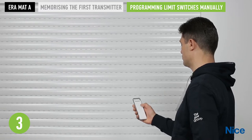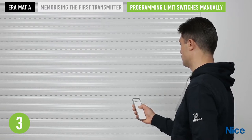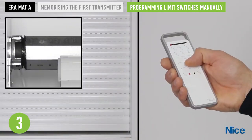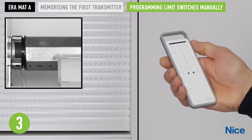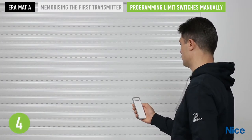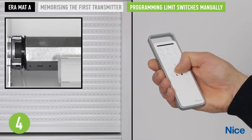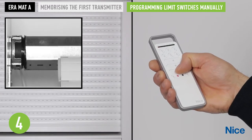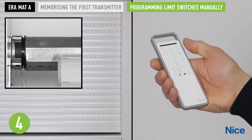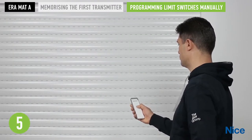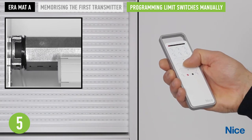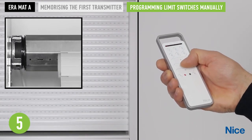Step 3: Press and hold the down arrow key and wait for the rolling shutter to perform two movements, then release. Step 4: Press and hold the down arrow key and wait for the rolling shutter to perform two movements, then release. Step 5: Press and hold the stop key and wait for the rolling shutter to perform three movements, then release.